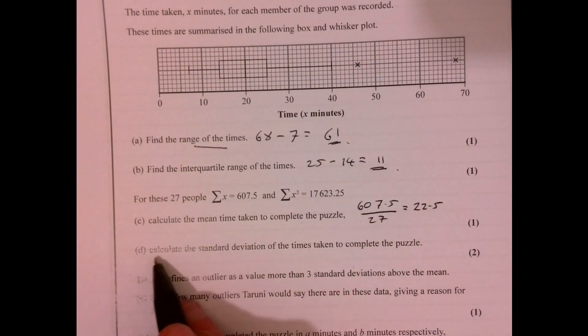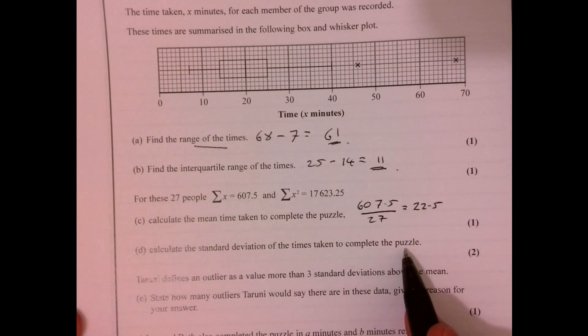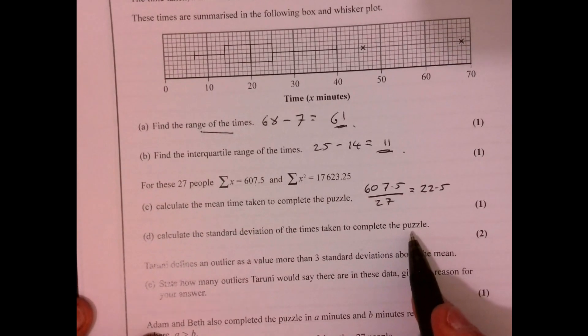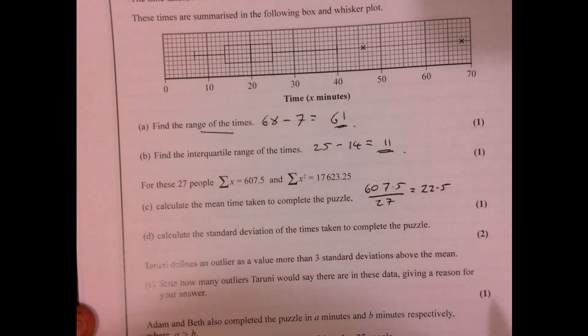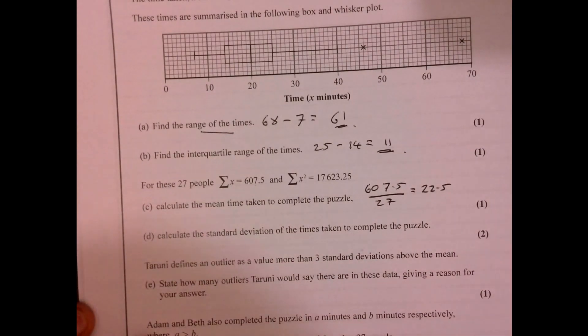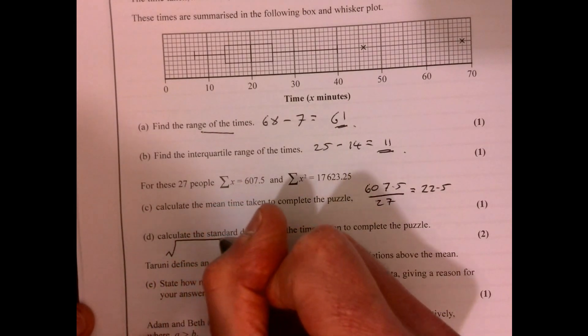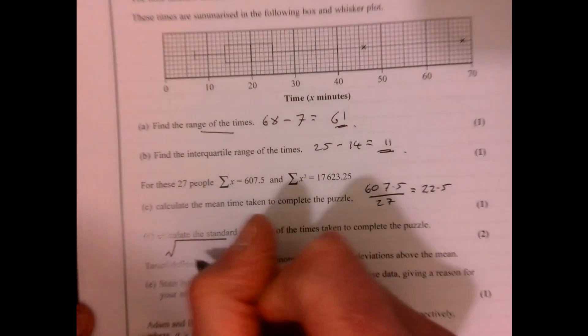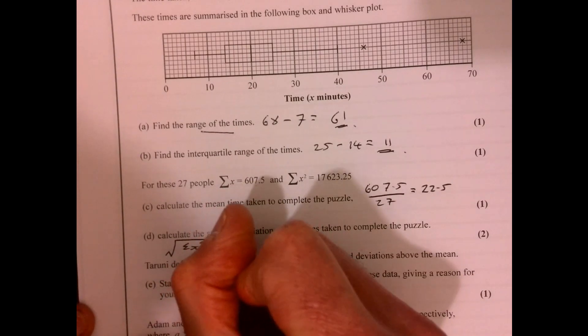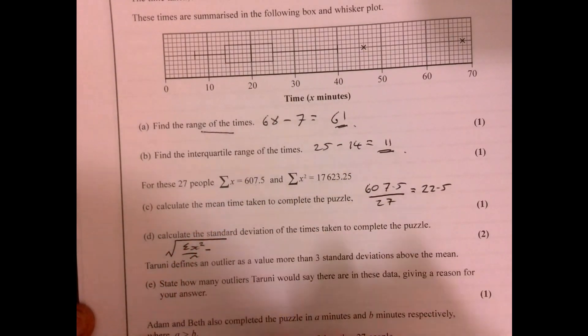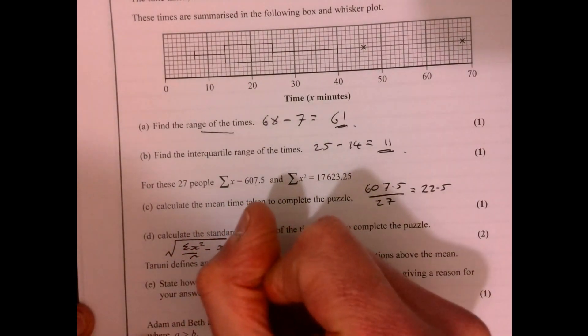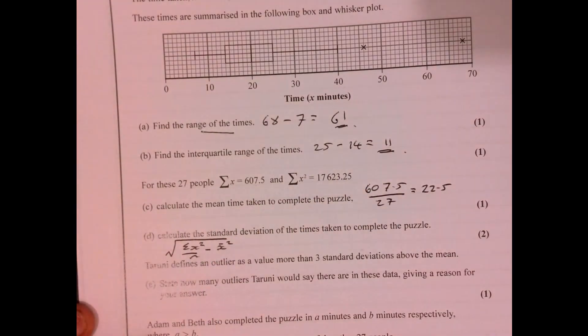Now we need to calculate the standard deviation of the time to complete the puzzle. So to work out the standard deviation, obviously we don't know the individual times. If we knew the individual times, we could just plug that into our calculator. We are told the formula for standard deviation. So it's the sum of x squared over n, take away x bar squared.